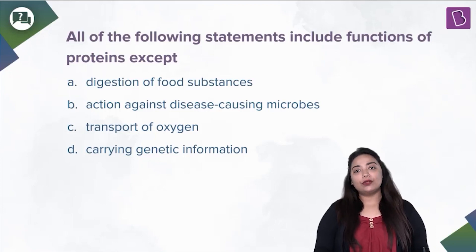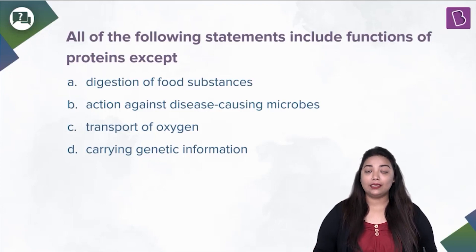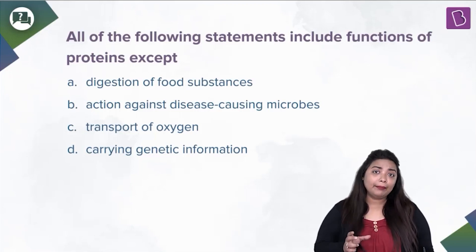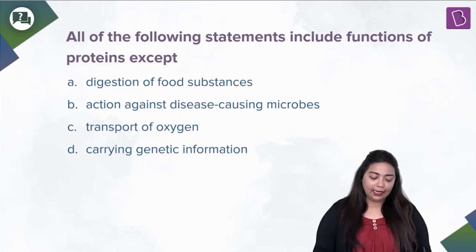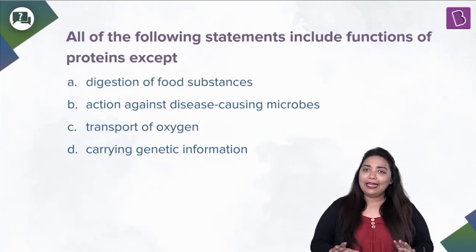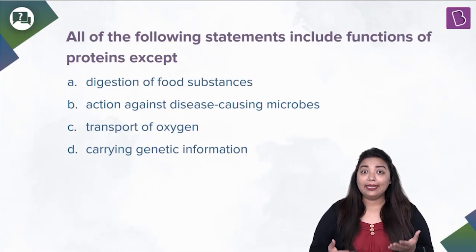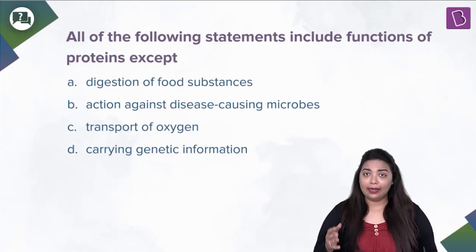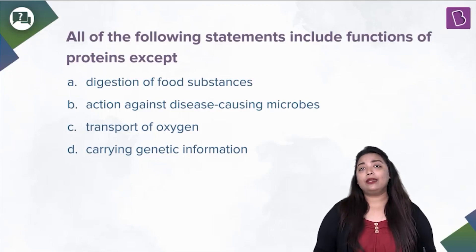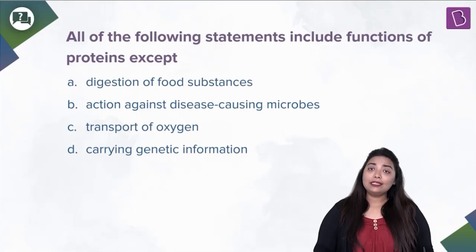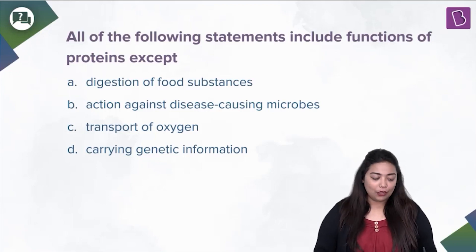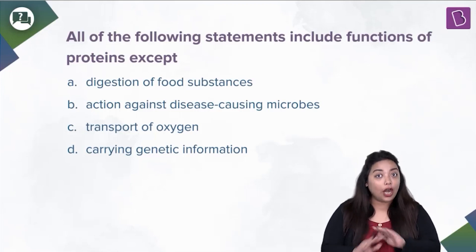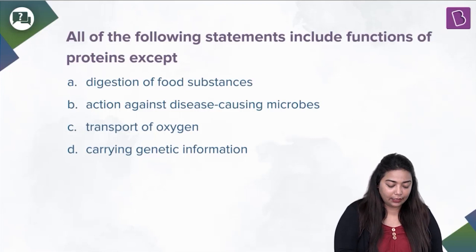Transport of oxygen is carried out by hemoglobin inside the RBCs. Hemoglobin is made of heme and globin, and protein is involved here as well. Option D: carrying genetic information. The genetic material is DNA and RNA — these are not made up of proteins; they are made up of nucleic acids. So there's no protein involved in carrying genetic information. The answer is Option D: carrying genetic information.